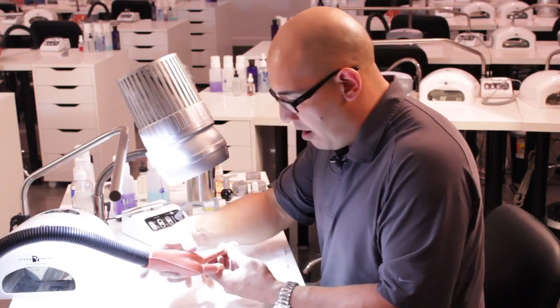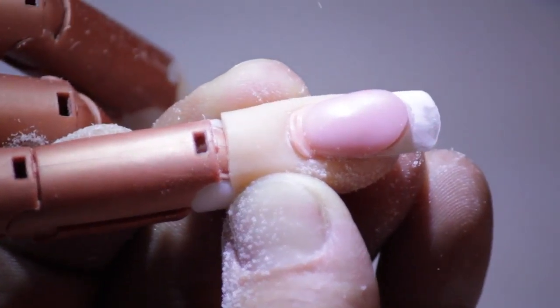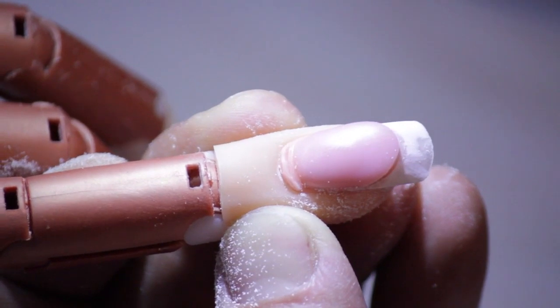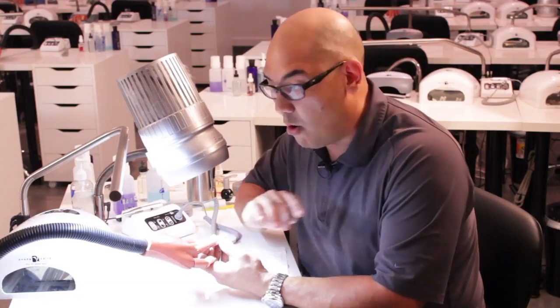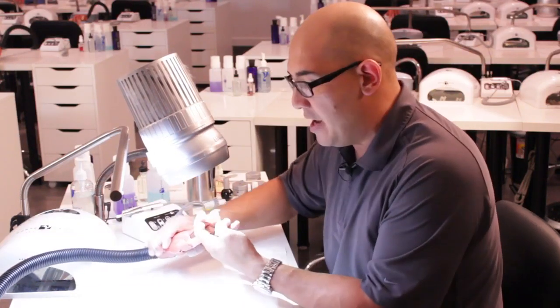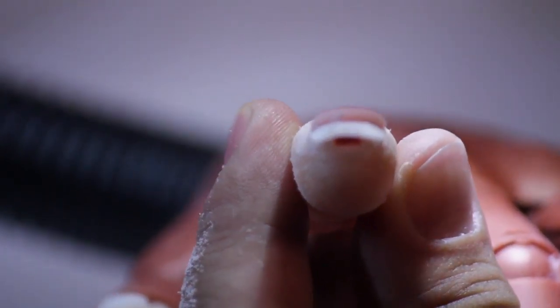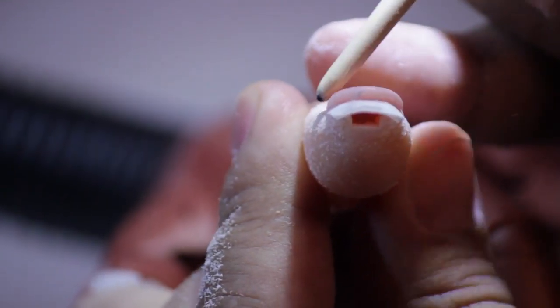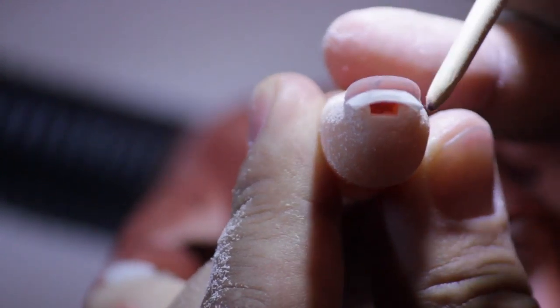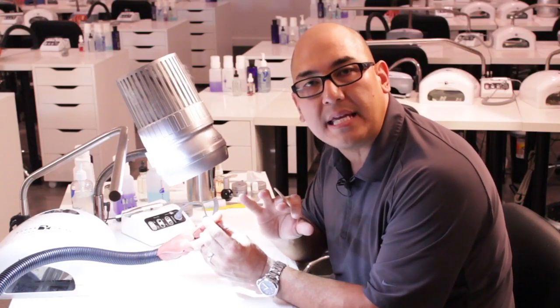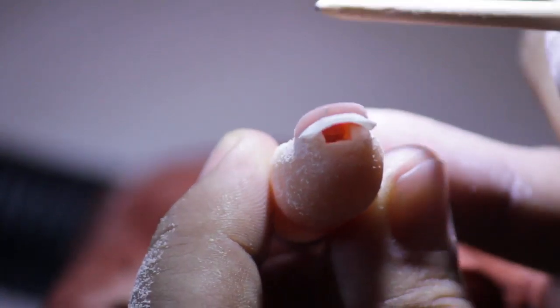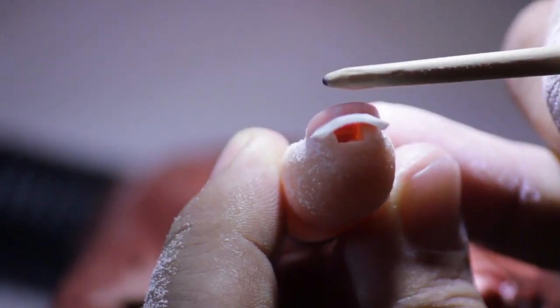This is the most important part. Take a look at the top - look how perfect my smile line is. Look down the barrel of the nail. You will notice the thickness from here to here is exactly the same. The reason we were able to get that is because we built that excess from here to here.